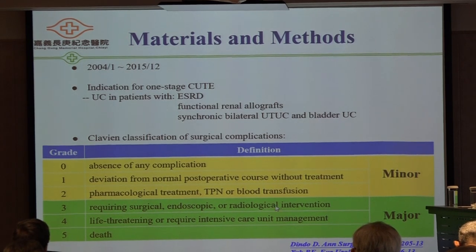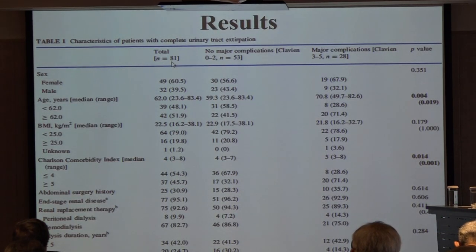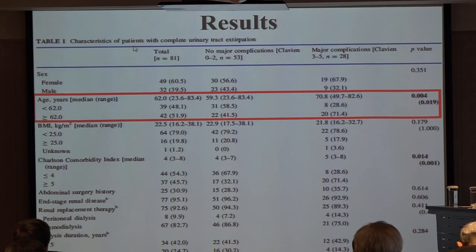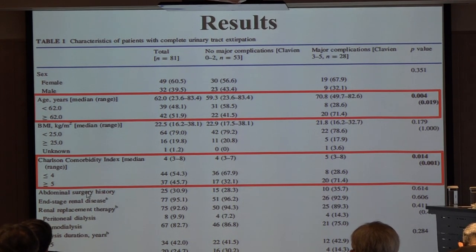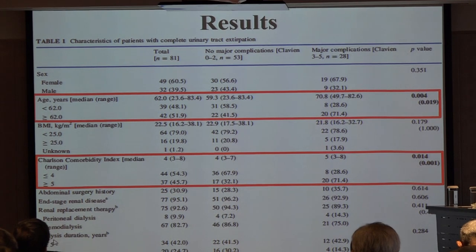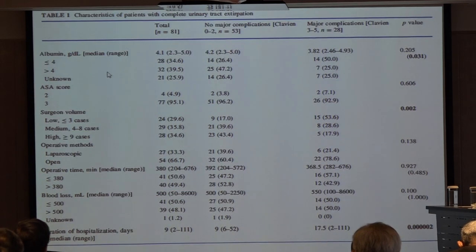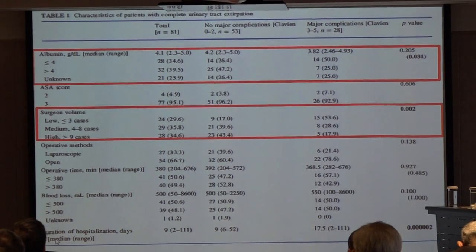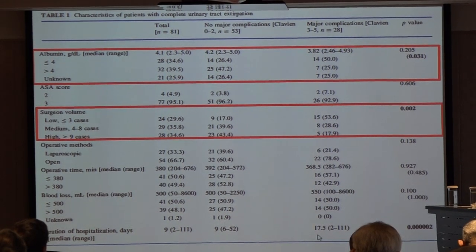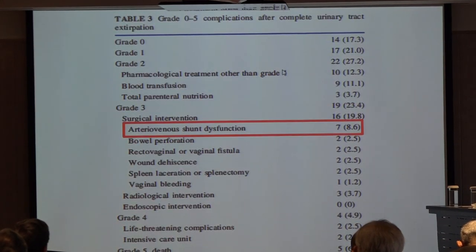We collected a total of 81 cases. Between the two groups, age and Charlson comorbidity score were significant. The major complication group had older age and a higher Charlson score. Gender, BMI, and domain surgery type were not significantly different. Preoperative BUN level and surgical volume were significantly different. Hospitalization days were longer in the major complication group. The most common major complication was AV shunt dysfunction.